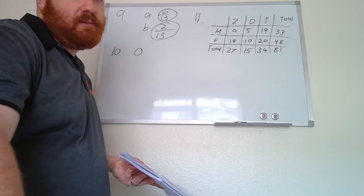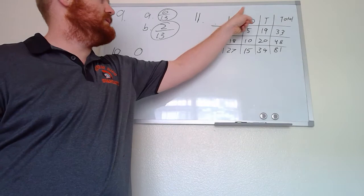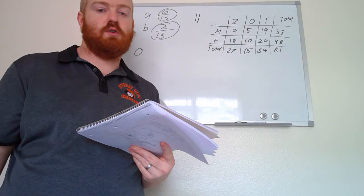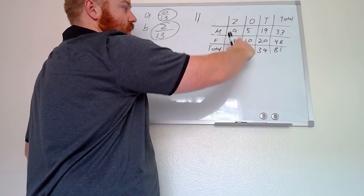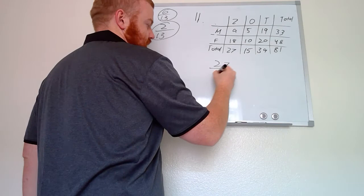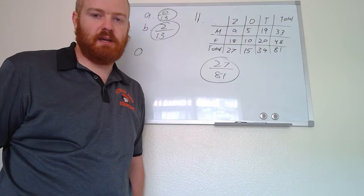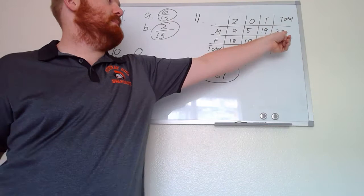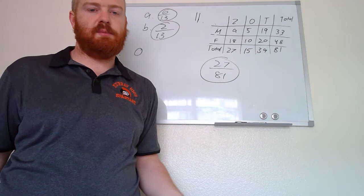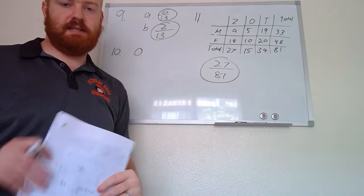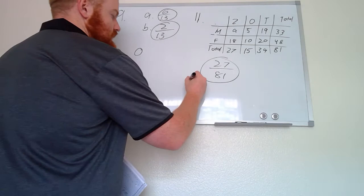For number eleven, a table shows the number of credit cards owned by a group of individuals, broken down by male, female, zero, one, two or more, and totals. If one person is chosen at random, the probability of having no credit cards is 27 over 81 (the zero-column total over the grand total). The probability of being male is 33 over 81, and the probability of being a female with one credit card is 10 over 81.